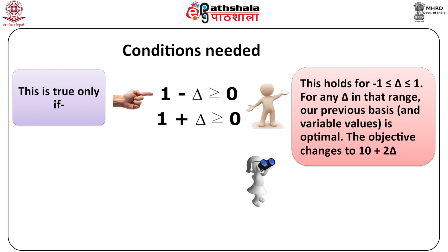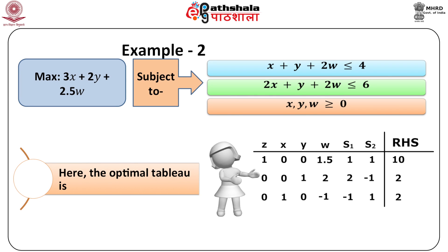Let us take another example where we change the cost of a non-basic variable. In the previous example, we had changed the cost of a basic variable. Example 2. Maximize 3x plus 2y plus 2.5w subject to x plus y plus 2w less than or equal to 4, and 2x plus y plus 2w less than or equal to 6, where x, y, and w are greater than or equal to 0. The optimal tableau is given.